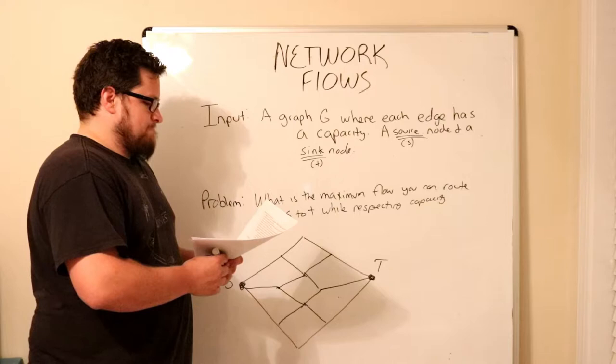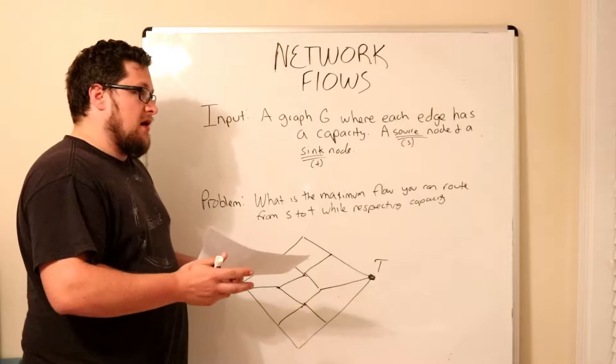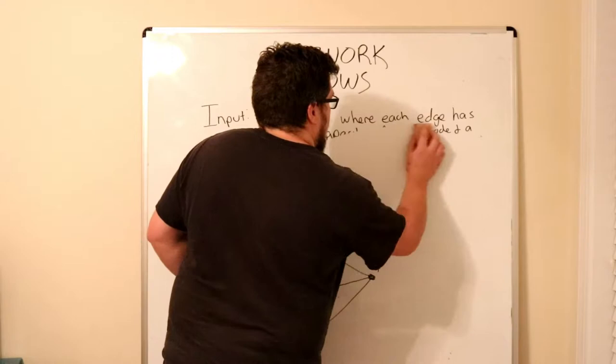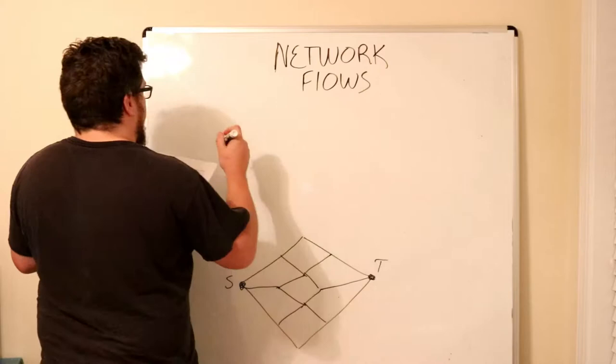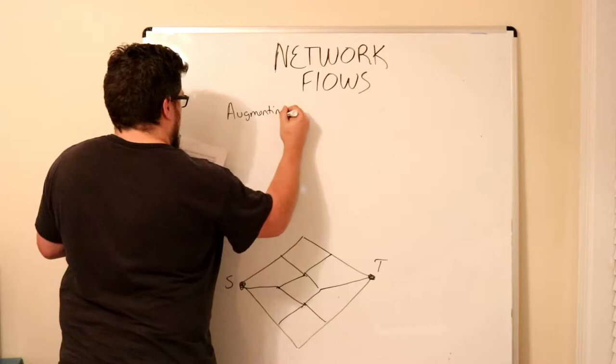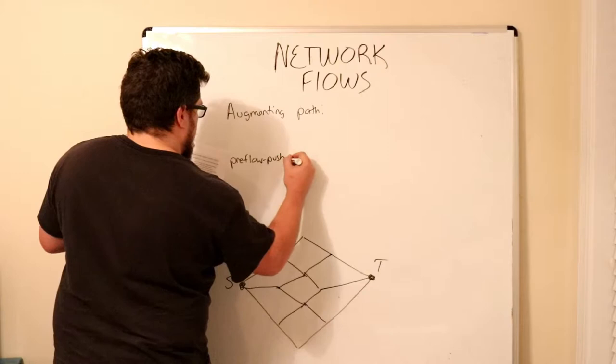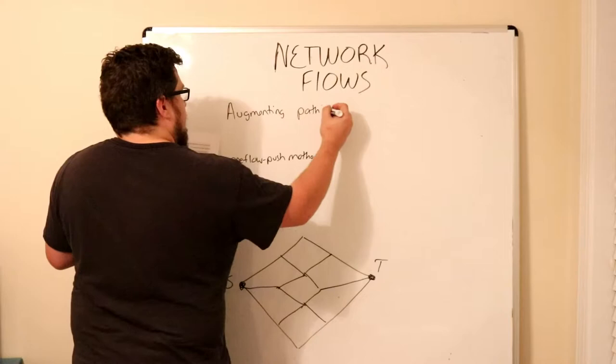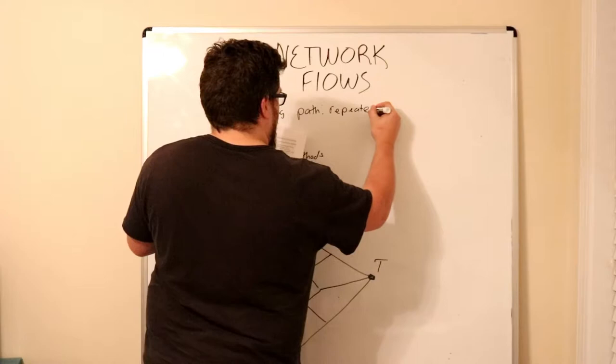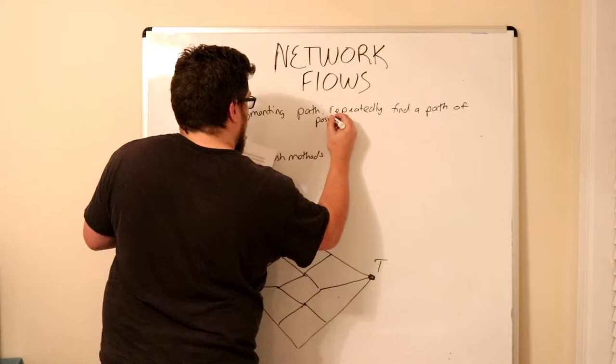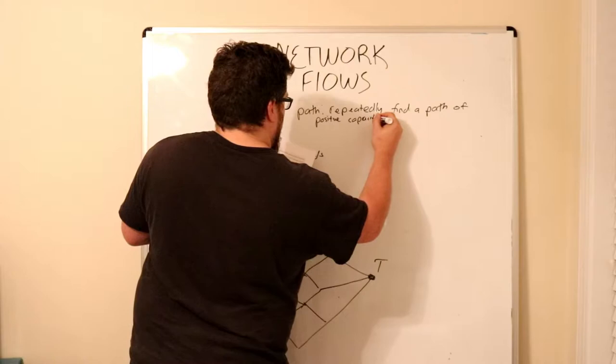The next thing we're going to jump into is there really are two major types that we're going to talk about. The first one is called augmenting path, and the second one is called preflow push methods. These basically repeatedly find a path of positive capacity from S to T. Remember what we said those words, source to sink.